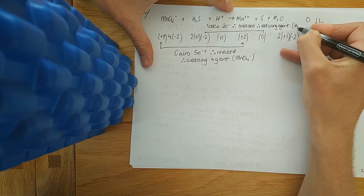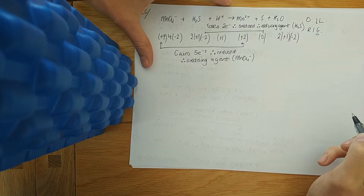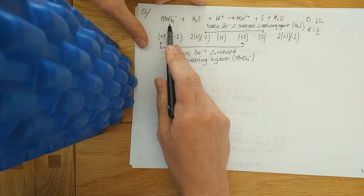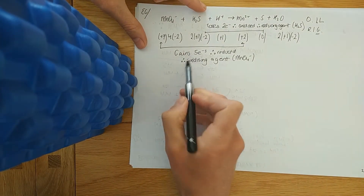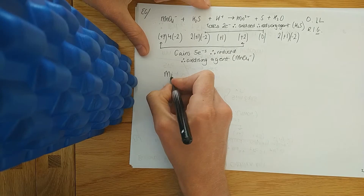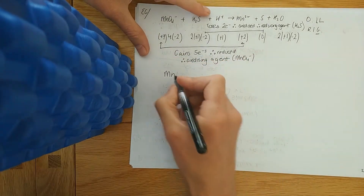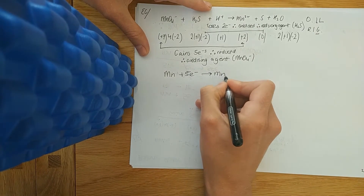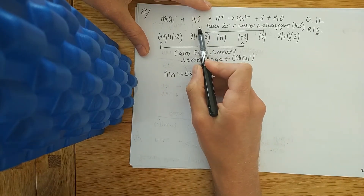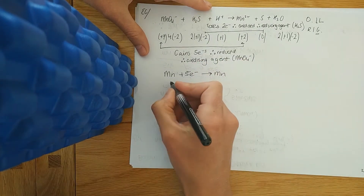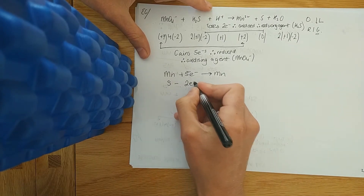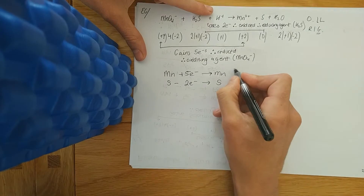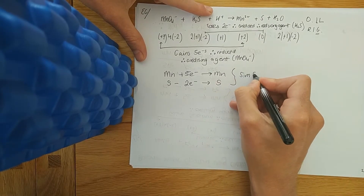The reducing agent is H₂S. Now convert the English into maths using the individual atoms. Manganese gained five electrons: Mn + 5e⁻ → Mn. Sulfur lost two electrons: S − 2e⁻ → S.